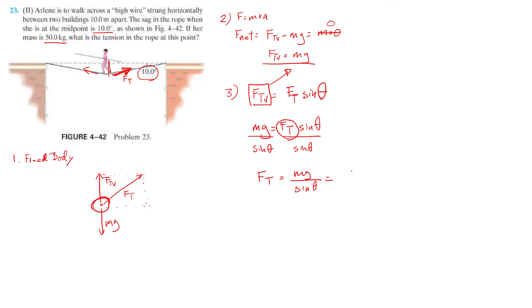The mass of this person is 50 kilograms. G is 9.8 meters per second squared. Sine of 10. When you plug it into the calculator, please make sure that you put parentheses around sine. And what I got was I got 2,882 newtons.